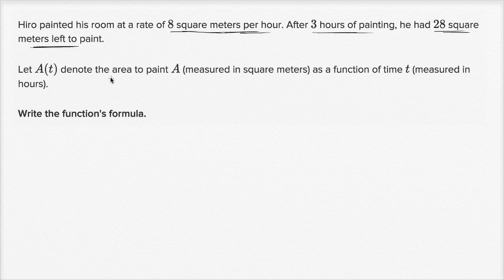Let a of t denote the area left to paint, measured in square meters, as a function of time t, measured in hours. So a of t is how much we have left to paint, not how much we have painted. The task is to write the function's formula.